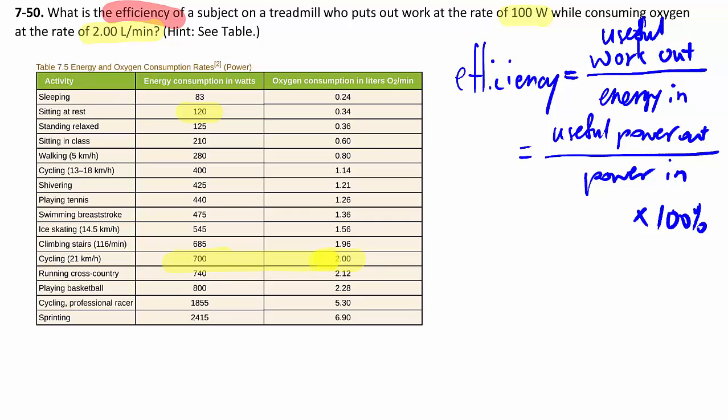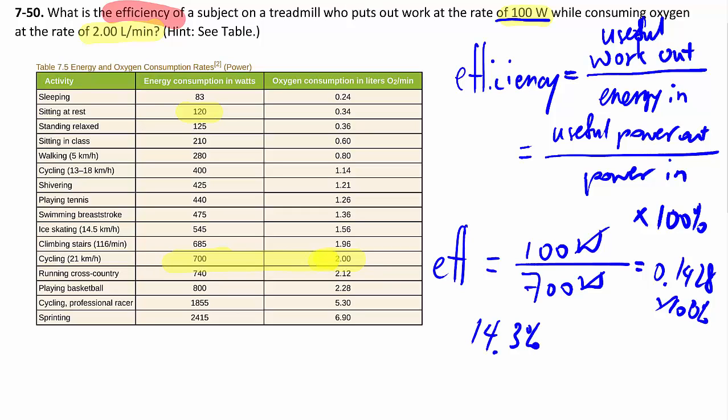Then the actual calculation is very trivial. The efficiency, which sometimes we abbreviate as eff, E-F-F, the amount of useful work you're getting out is given to us - that's the amount of work we're putting out. And the rate we're consuming energy here in watts is 700 watts. The watts cancel out, we get a ratio. If you want, you can multiply by 100%, giving us 14.3% efficiency.